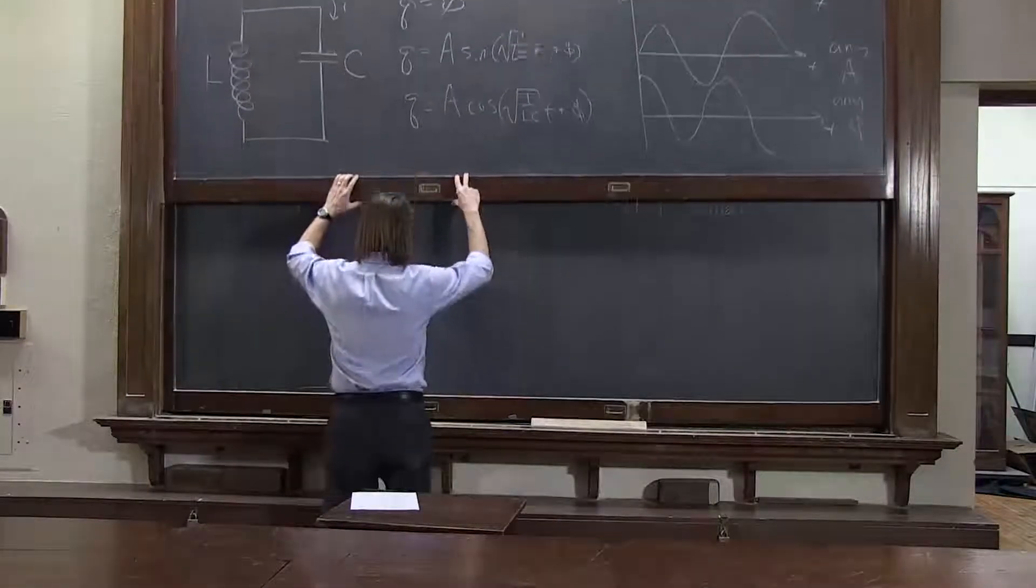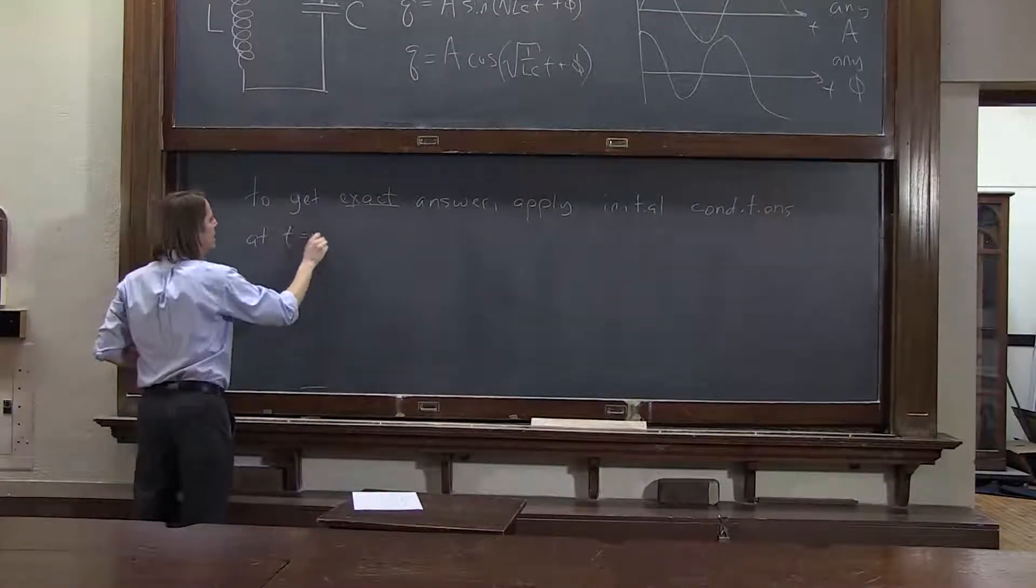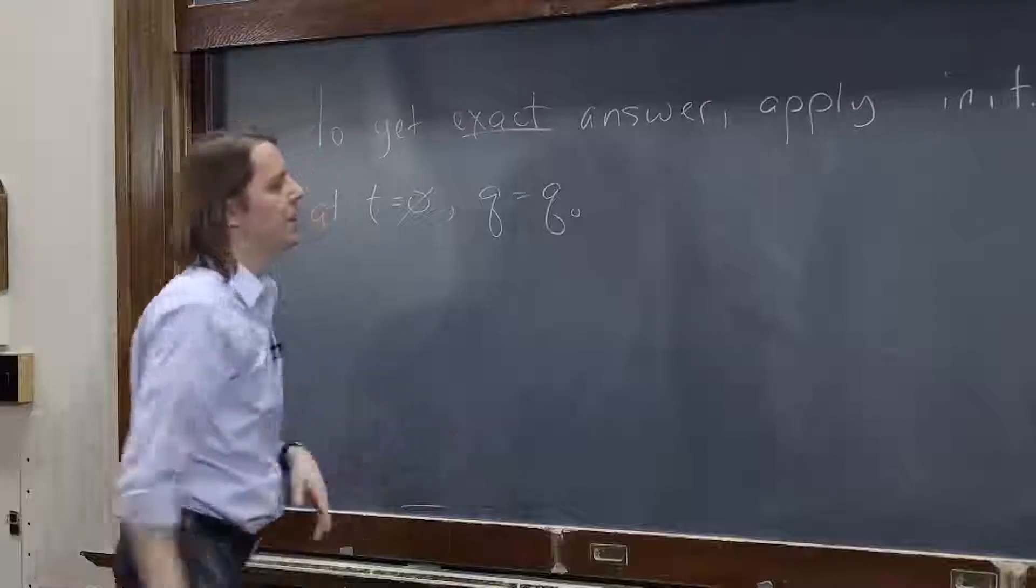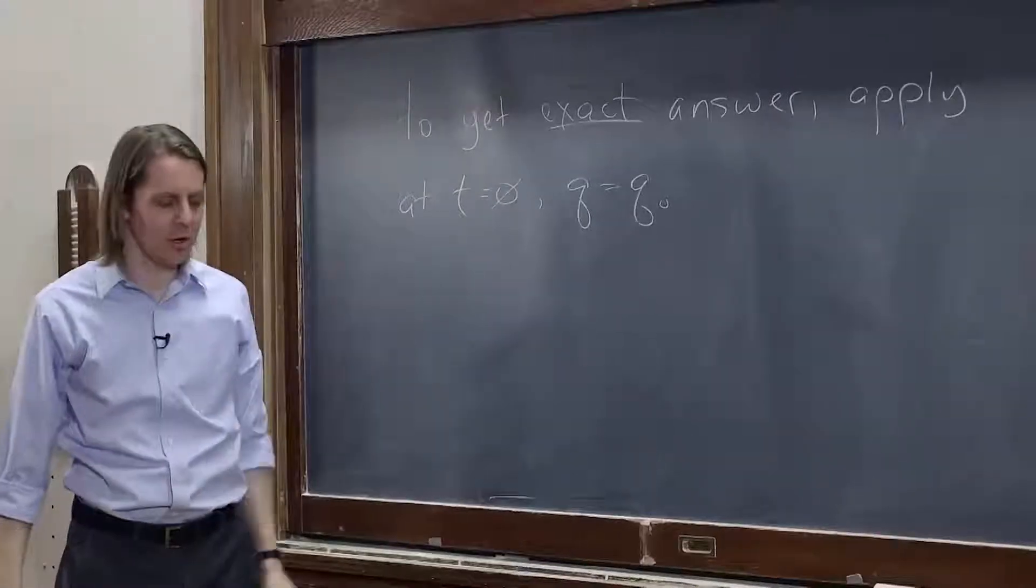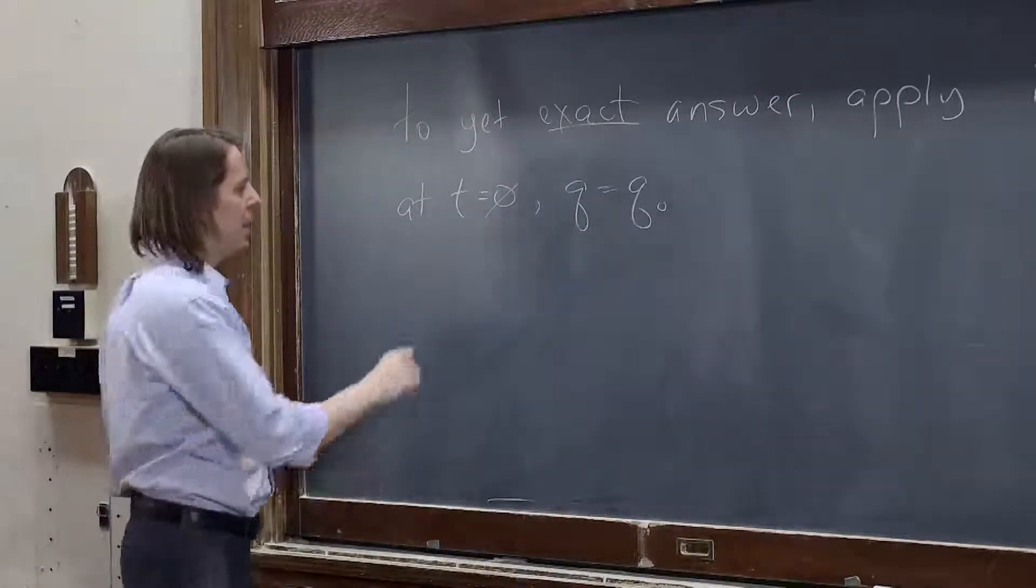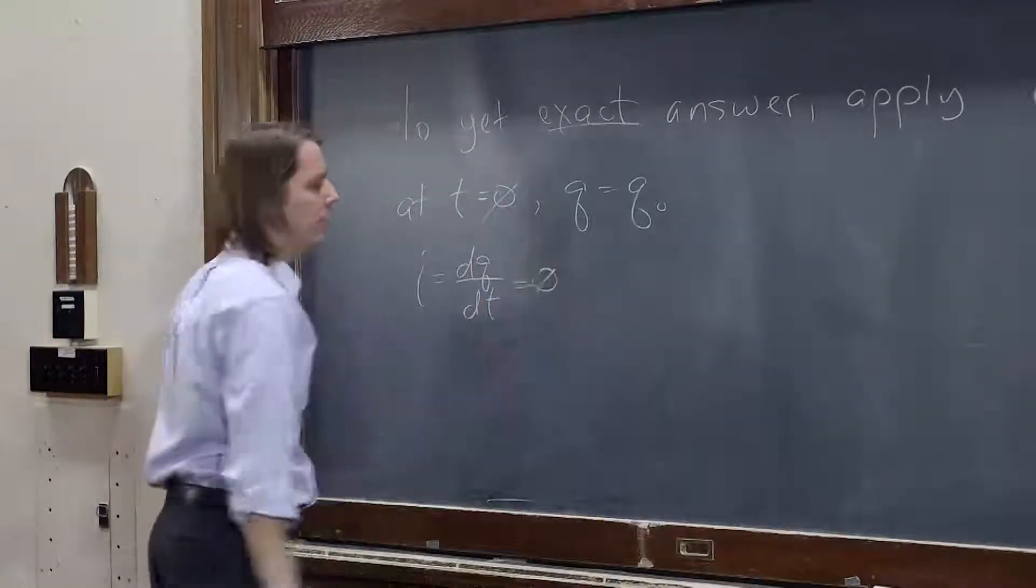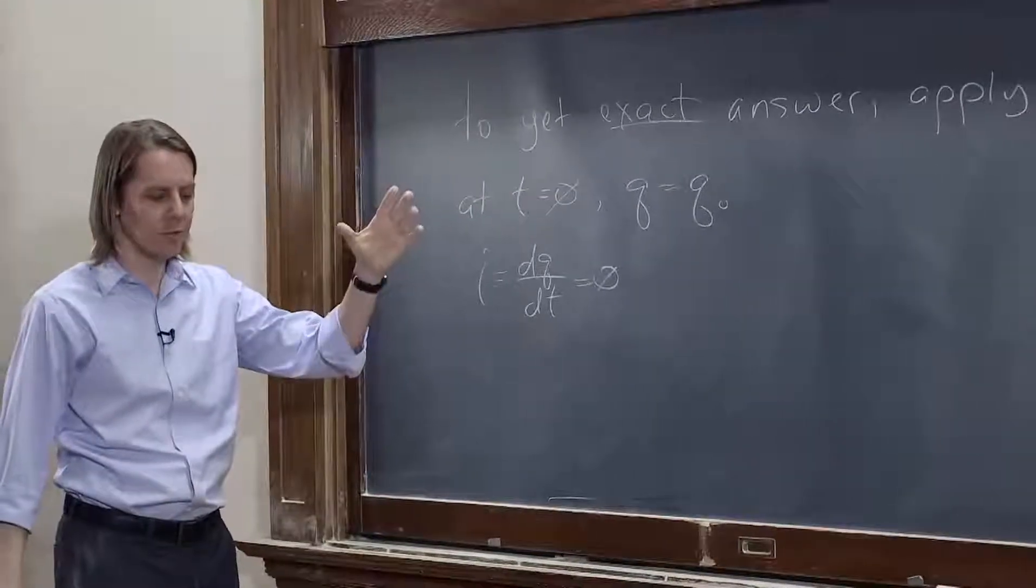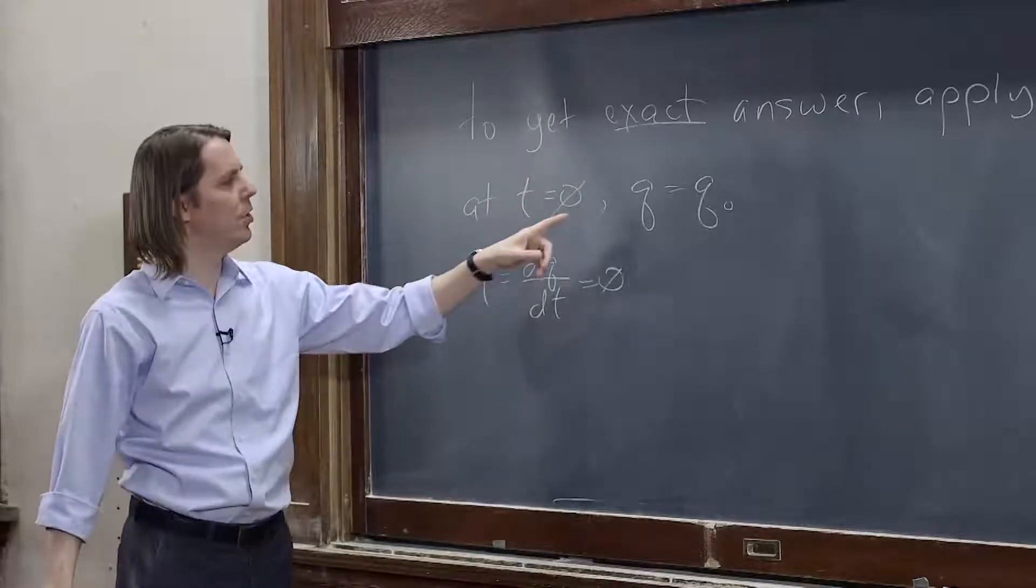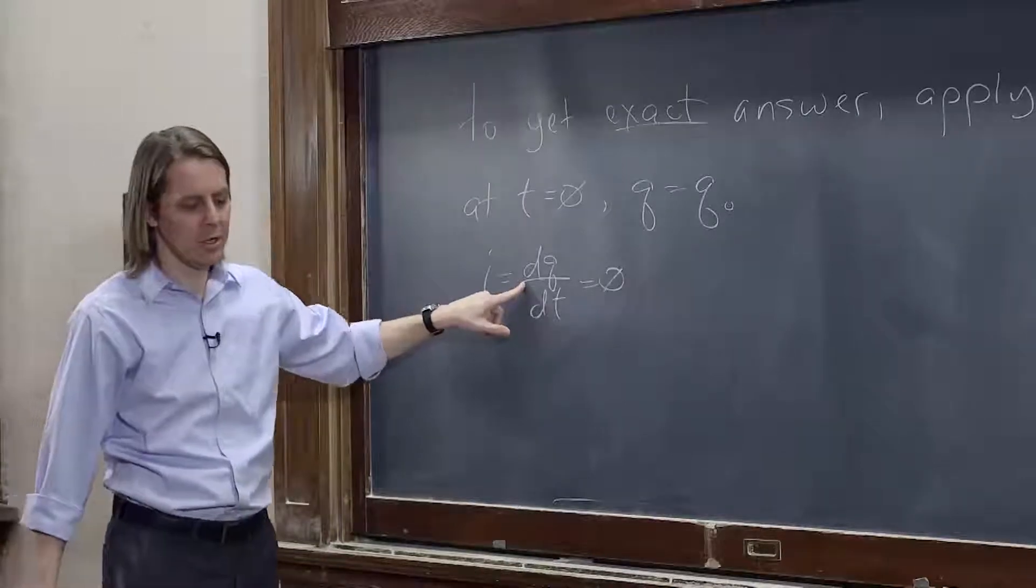So the way we would describe that mathematically is that at t equals zero, q equals q naught. That's how much charge we pulled and stuck on the top plate before we released it. And also, i, which is dq dt, also equals zero. We're going to start it from rest and release it and see what happens. Okay, so we have two boundary conditions. One on the charge, the function, and one on the rate of change of the function.